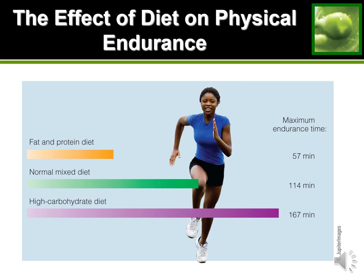Because of how important carbohydrates and glucose are for keeping you going, a study looking at different types of diets found that a high-carbohydrate diet lasted the longest for endurance activity, compared to a fat-and-protein-based diet and a normal mixed diet. The reason is that once you're out of glucose, your body can't function anymore — so the more glucose you have stored, the longer your body will be able to continue.